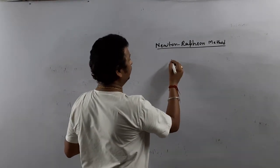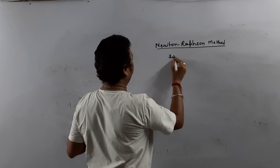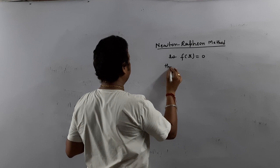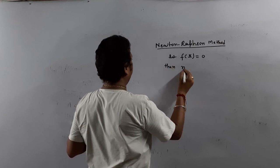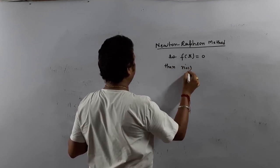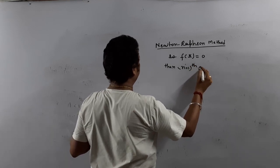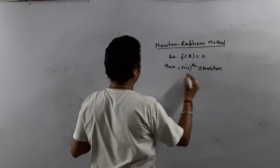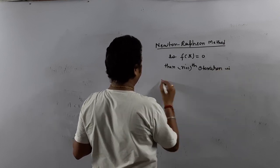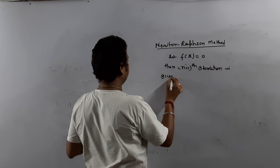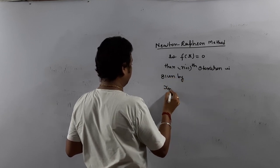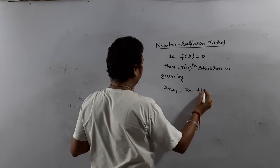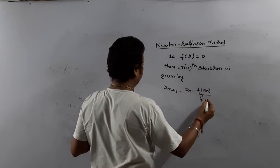What is the iteration formula for this? Let's say we have to solve f(x) equals zero. Then the n+1th iteration is given by x_{n+1} equals x_n minus f(x_n) upon f'(x_n).